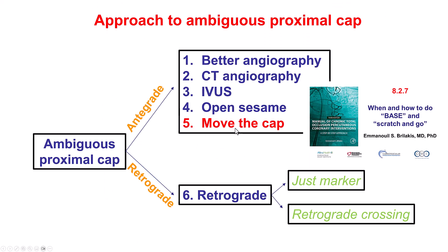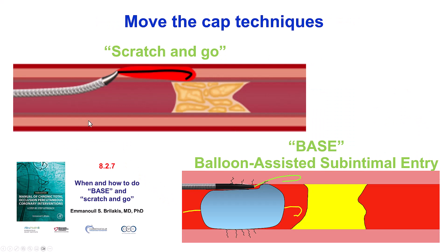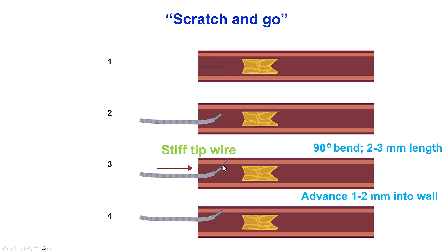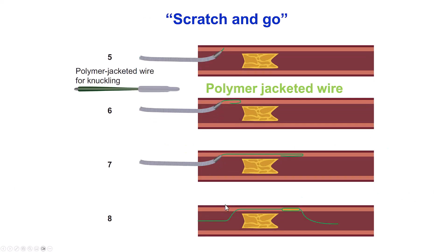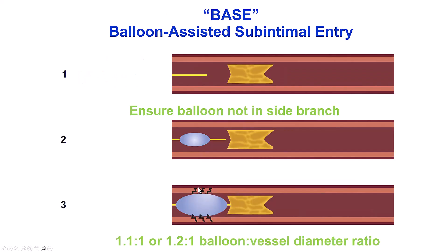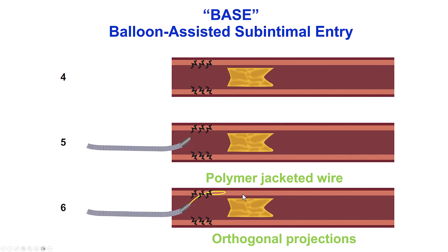The fifth technique is the so-called move the cap techniques, which use the extra-plaque space for crossing through the CTO. There are two such techniques discussed in detail in video 8.2.7. The first is scratch and go, in which we advance a stiff wire into the wall of the vessel followed by a polymer-jacketed wire. The other is the BASE technique — balloon-assisted sub-intimal entry — in which a balloon is inflated in the proximal vessel causing dissections in the wall, and then a polymer-jacketed guide wire is inserted into the extra-plaque space. In scratch and go, we advance the stiff wire first, partially into the wall, take it back, and then advance the polymer-jacketed wire. In the BASE technique, we use a slightly oversized balloon to cause dissections in the proximal vessel, then a polymer-jacketed wire goes into the extra-plaque space.